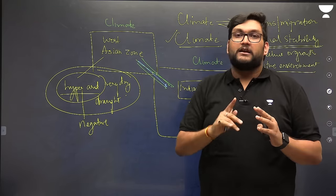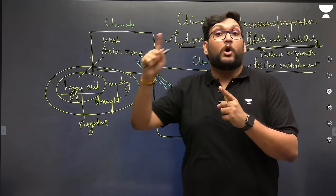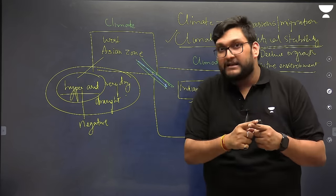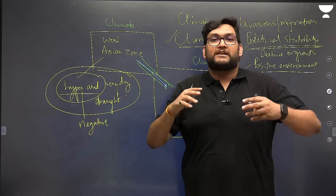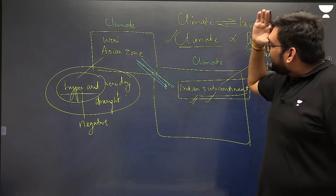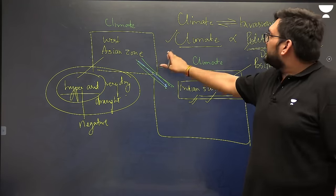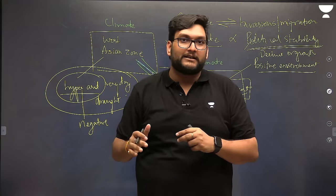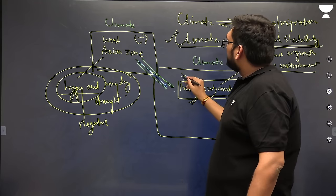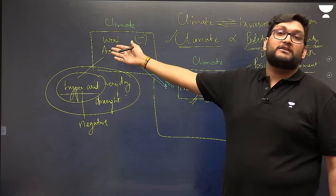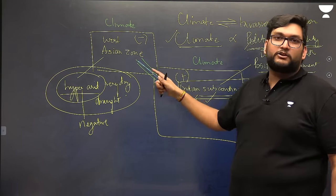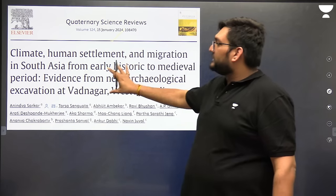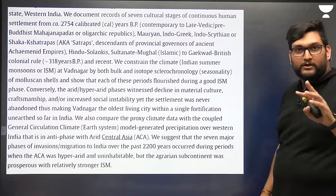In GS Paper 1, you can expect a question on this. In 2023 they already asked how geography has determined the political history of India. Now it can also ask how environment can decide the political history of India — that is not out of syllabus, it is a current affairs question straight from an article on Vadnagar, establishing that if climate is positive there is a positive correlation with political stability, and when climate is unfavourable in the West Asian zone there are invasions and movement into the Indian subcontinent. This is based on a very important article which came out in a science review and talked about the historical significance of Vadnagar excavations.